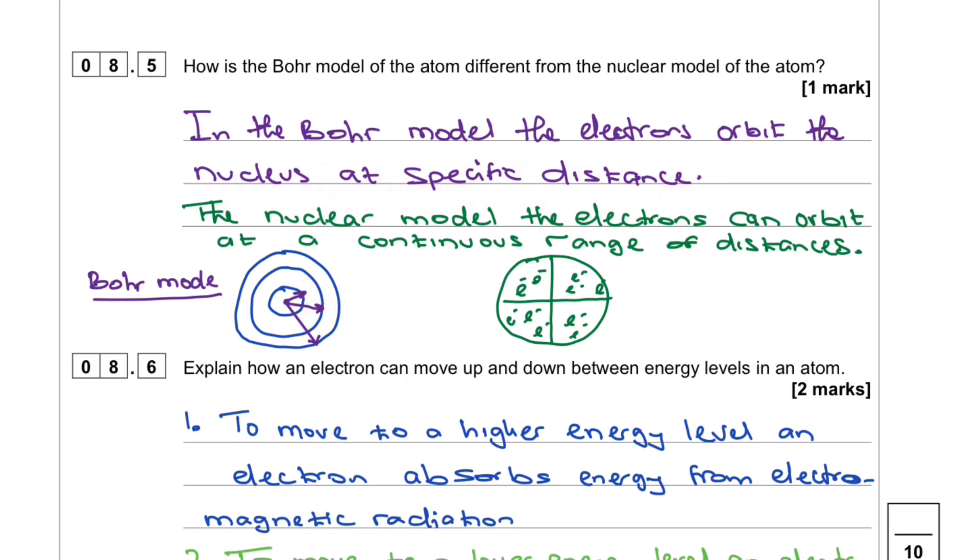That specific distance which we call energy levels. The nuclear model, the electrons can orbit at a continuum range of distances. So anywhere, there is no energy level basically.